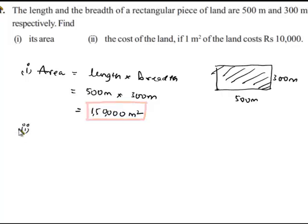In the second question, we are asked to find the cost of the land if 1 meter squared of the land costs Rs 10,000. Here it is given that 1 meter squared of land costs Rs 10,000, and we are asked to find the cost for 150,000 meters squared.